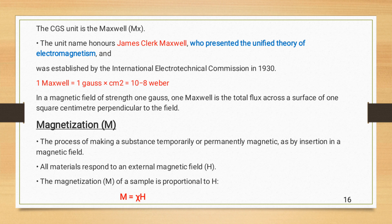Magnetization is the process of making substance temporarily or permanently magnetic as by the insertion in the magnetic field. If we place any material in magnetic field, there is some interaction because the magnetic field produced by the electron due to its spin motion and angular orbital motion, the both fields interact.